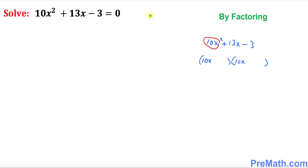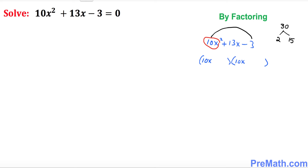Next, I want you to multiply the end numbers: 10 and 3 — don't worry about the negative sign — so 10 times 3 is 30. What are the possible factors of 30 that give you 13? That's going to be 2 and 15: multiply them and you get 30, subtract them and you get 13.